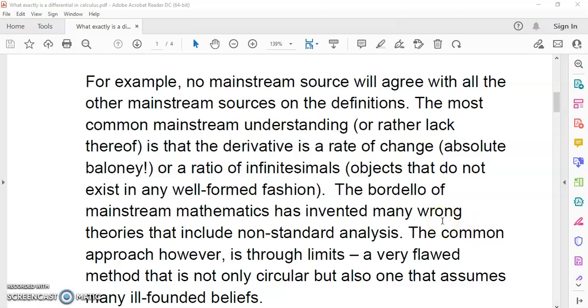The most common mainstream misunderstanding is that it's a rate of change or an instantaneous rate of change, like that profound idiot Gilbert Strang from MIT who has written textbooks that are full of garbage about this, or that it is a ratio of infinitesimals, like that idiot Abraham Robinson who wrote the mainstream book on non-standard analysis.